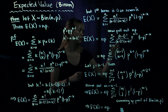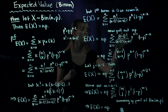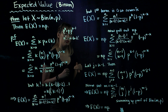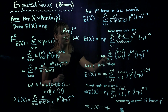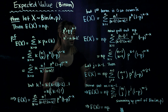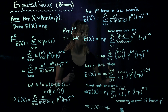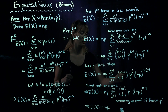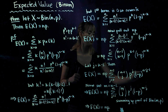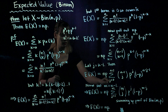Looking at this piece, we see it looks like n minus 1 choose k minus 1. So we change the indexing by setting j equals k minus 1. If k went from 1 to n, then j goes from 0 to n minus 1. Replacing k minus 1 with j throughout: n minus 1 choose k minus 1 becomes n minus 1 choose j, p to the k minus 1 becomes p to the j, and 1 minus p to the n minus k becomes 1 minus p to the n minus j minus 1. The sum runs from j equals 0 to n minus 1.